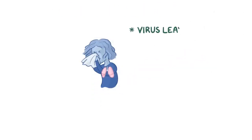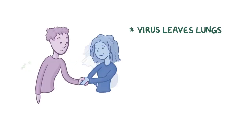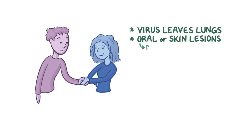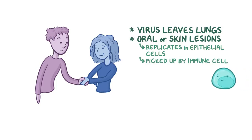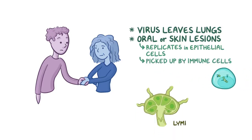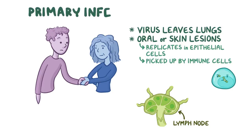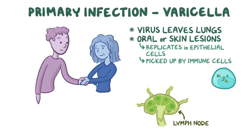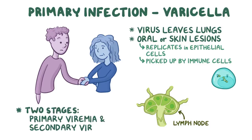When an infected person sneezes or coughs, the viruses leave the lungs and get released into the air. The virus can also be transmitted through contact with oral or skin lesions of an infected person. When the virus contacts the respiratory mucosa or skin of a new person, it starts replicating in the epithelial cells, gets picked up by nearby immune cells, and is transported to a nearby lymph node. The virus then causes a primary infection called varicella, or chicken pox, which has two stages: primary viremia and secondary viremia.